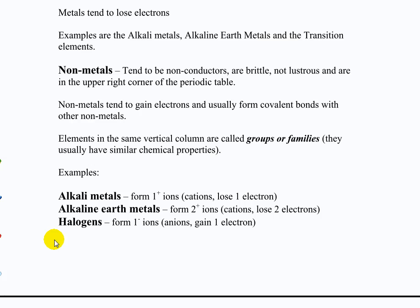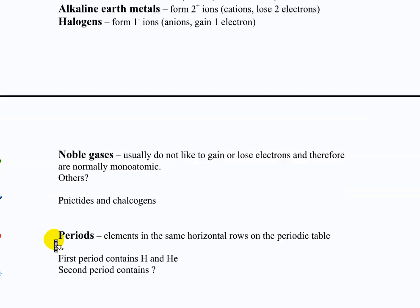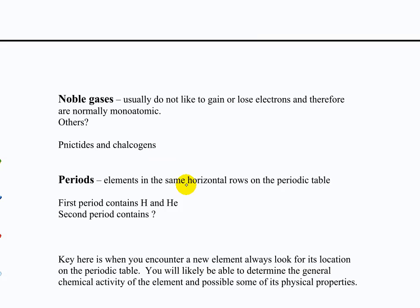Halogens — over on the right, fluorine down through iodine — generally tend to form one-minus ions, gaining one electron, when they're in ionic compounds. The pnictides are group 5, or 15, which is phosphorus through bismuth. The chalcogens are the next row over — oxygen through tellurium. We don't usually talk about polonium or astatine in these families because those are radioactive and don't have the same properties, so we usually just ignore them.